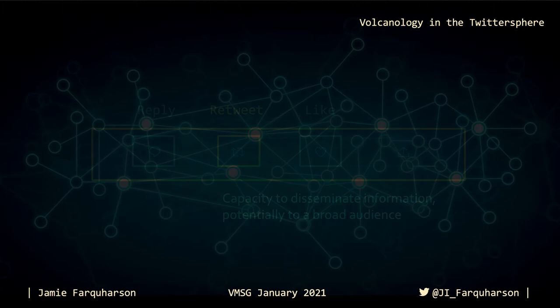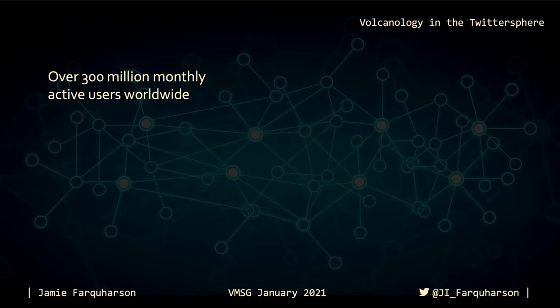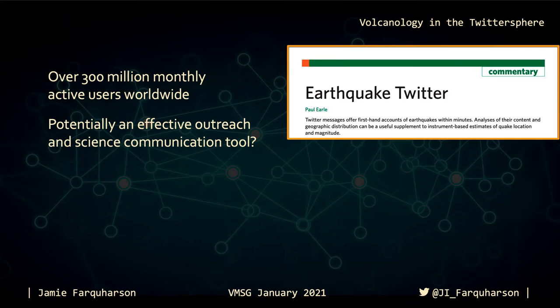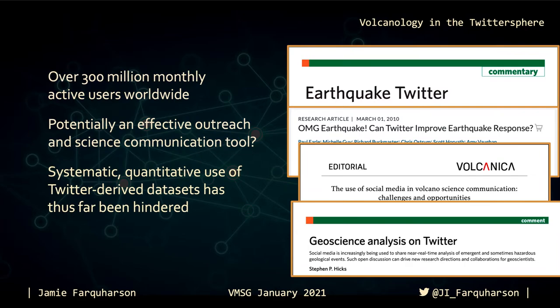So why might we be interested in Twitter? There are over 300 million monthly active users worldwide, and largely due to its popularity in academic circles, Twitter is frequently lauded as an effective outreach and science communication tool, especially in the geosciences. The idea that Twitter data could be leveraged quantitatively has been floated on multiple occasions, though there exists limited evidence to support this, in large part due to limitations imposed by Twitter's Search API, which restricts both the number of tweets that can be crawled and the timespan over which this can be performed.